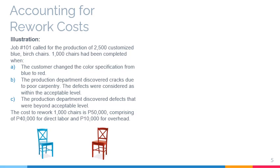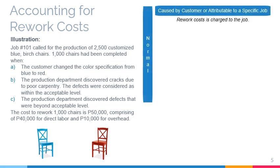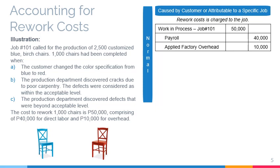The cost of reworking defective units is accounted for in a similar manner as spoilage. In Scenario A, the rework was due to the change in the customer's order. Rework that is due to the customer or is attributable to a specific job is charged to the job at cost less disposal value. Hence, work in process job number 101 is debited for the rework cost of 50,000 pesos, with corresponding credits to payroll and applied factory overhead for 40,000 pesos and 10,000 pesos respectively.